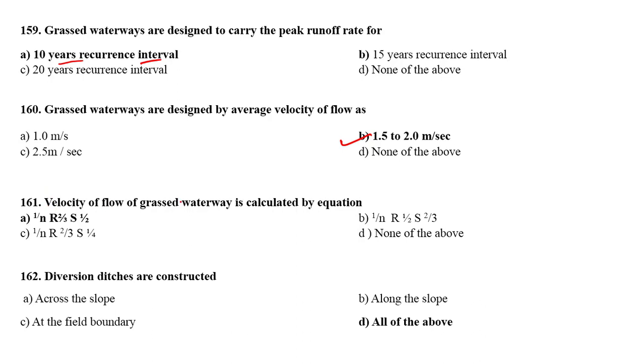Velocity of flow of grassed waterways is calculated by equation 1/n × R^(2/3) × S^(1/2).